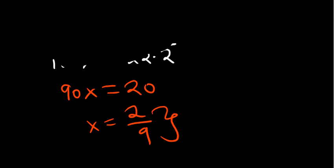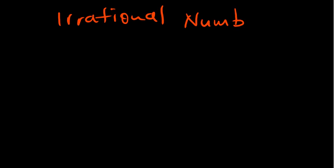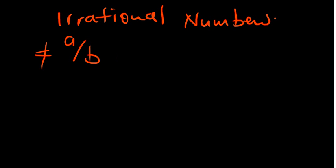On the contrary, we have irrational numbers. These are numbers that you cannot express in the form of a over b. Examples of irrational numbers are imperfect squares — any root of an imperfect square, whether negative or positive, is a good example of an irrational number. We are not able to express such a number in the form of a over b.